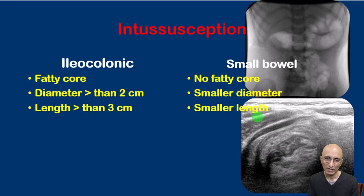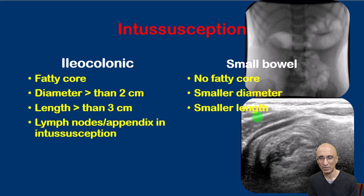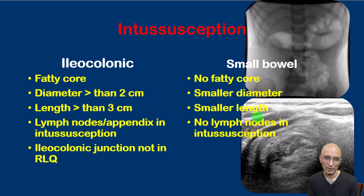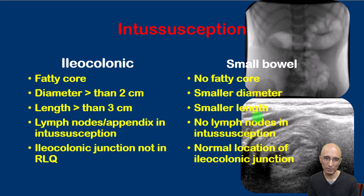In fact, if there is a suspected small bowel to small bowel intussusception but the length is greater than three centimeters, there may be a secondary cause such as a polyp or Meckel's diverticulum. Also, as seen in our patient, there can be lymph nodes and appendix within the intussusception in the ileocolonic type, which will not be seen in small bowel intussusception. With ileocolonic intussusception, the ileocecal valve and the appendix are not seen in the right lower quadrant, whereas they will be in normal location in patients with small bowel to small bowel intussusception.